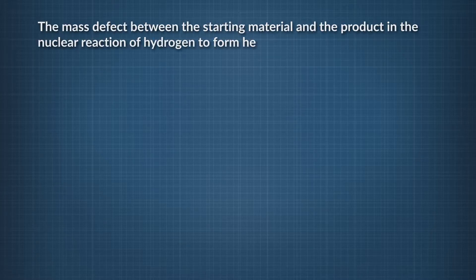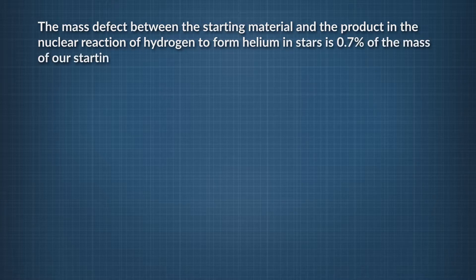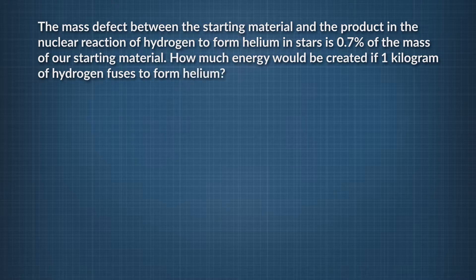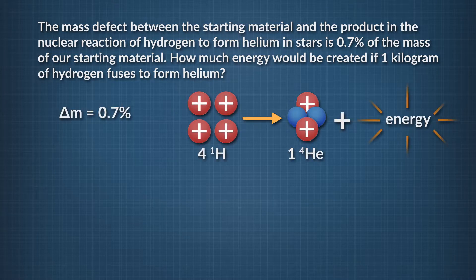The first thing is to determine how much mass is lost in the process. The mass defect is 0.7%, so we have to find 0.7% of our initial starting material. To get the percentage into a decimal value, think of 100% as one whole. To know what 0.7% of a whole is, you simply divide 0.7 by 100 and end up with 0.007.